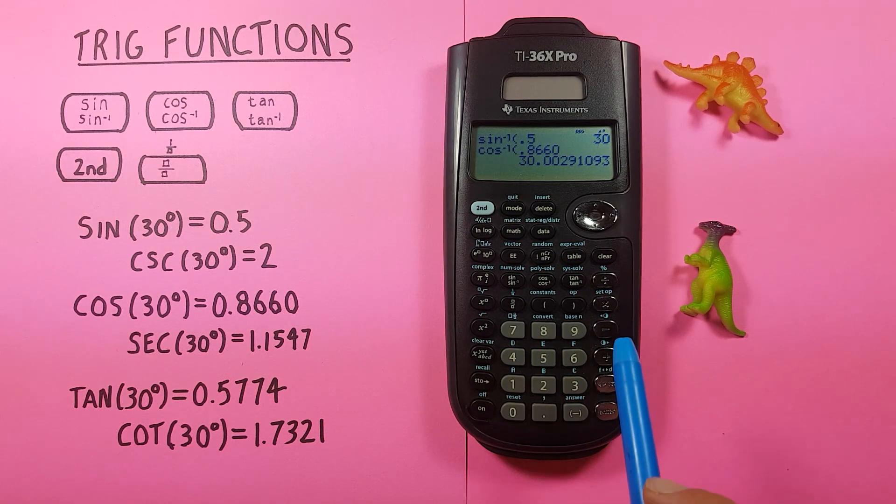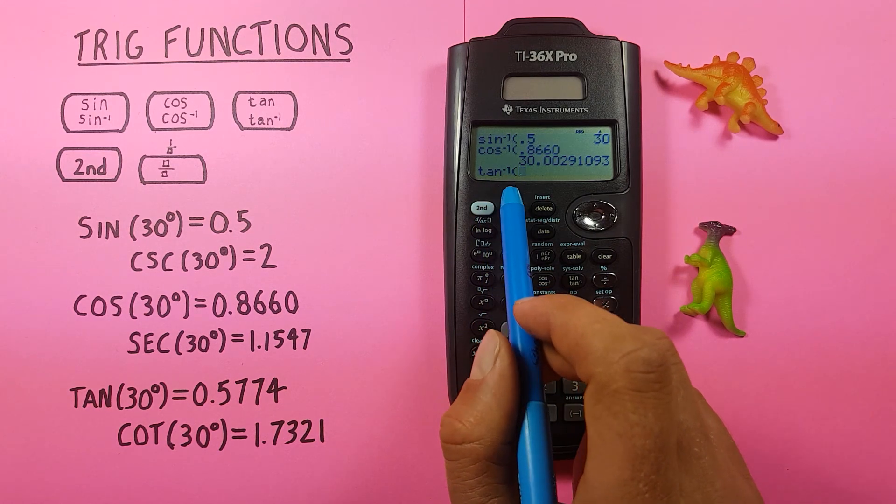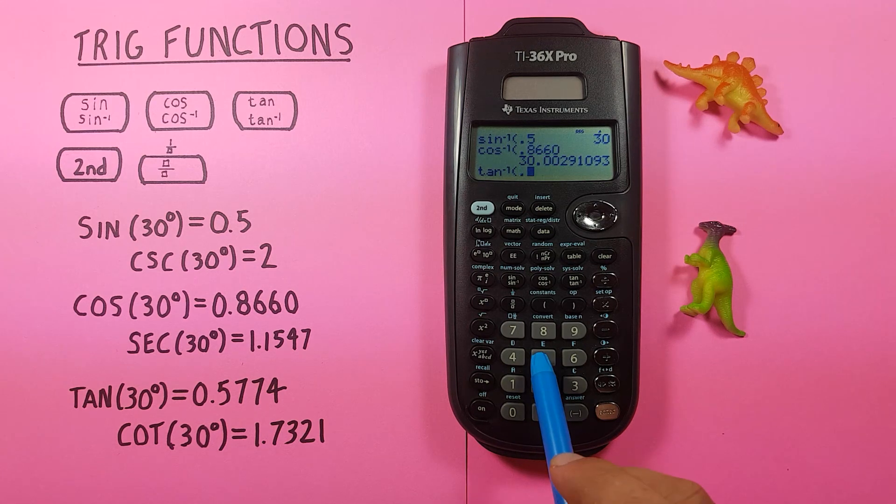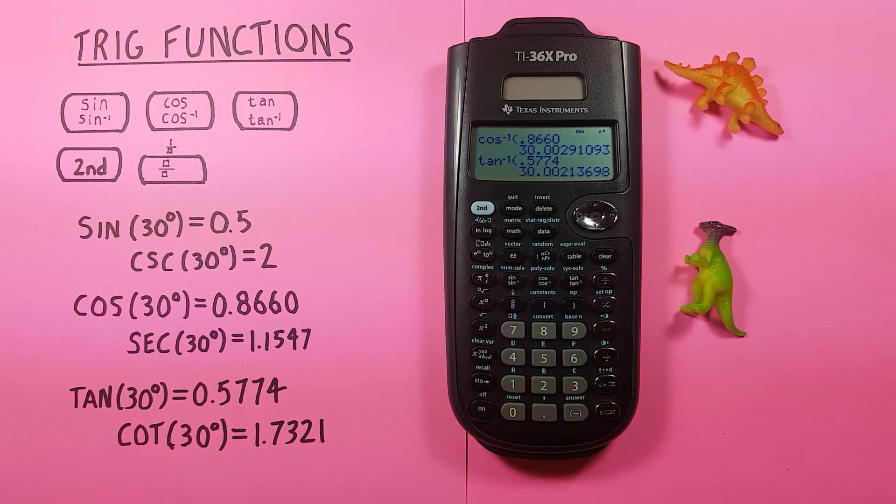And finally arctan. We press tan twice. There's our tan to the power of minus one, or arctan. And for this one we got 0.5774, and enter, and again we get what would round to 30 degrees.